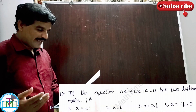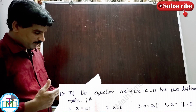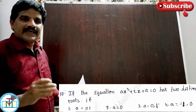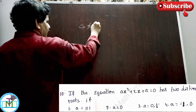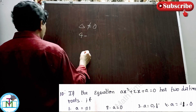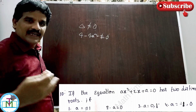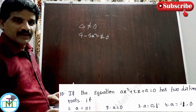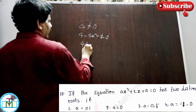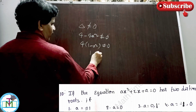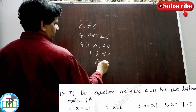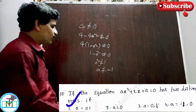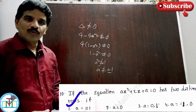Question number 10: If ax² + 2x + a = 0 has two distinct real roots, find the condition on a. Two distinct real roots means discriminant Δ ≠ 0. Δ = b² - 4ac = 4 - 4a² ≠ 0. Taking out common factor 4: 1 - a² ≠ 0, so a² ≠ 1, meaning a ≠ ±1. Therefore option 1, a ≠ ±1, is the right answer.